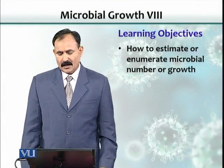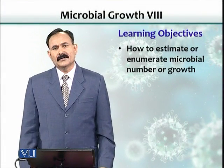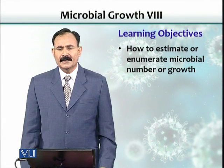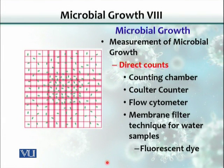Learning objectives include how to estimate or enumerate a microbial number or growth. Microbial growth could be estimated by direct methods or by indirect methods. The direct methods, or direct counts, are those where we look at the number of organisms directly, whether they are alive or dead — we don't care. All we do is enumerate them, count them.